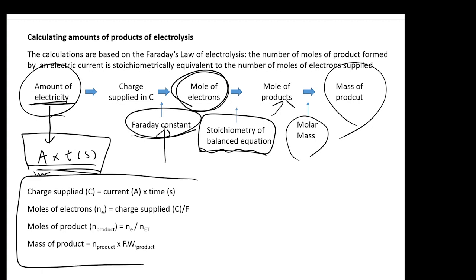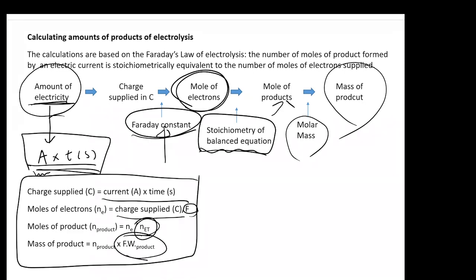To summarize each conversion step: current (A) times time (seconds) gives you the charge. Charge divided by the Faraday constant gives you the number of moles of electrons. Then, from the balanced equation, you determine how many electrons are transferred per mole of product formed. Finally, multiply the number of moles of product by the formula weight to get the final mass.